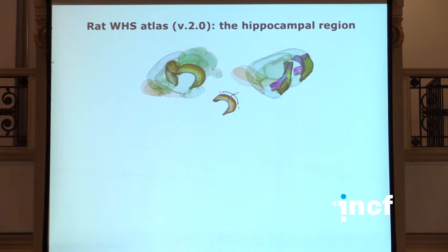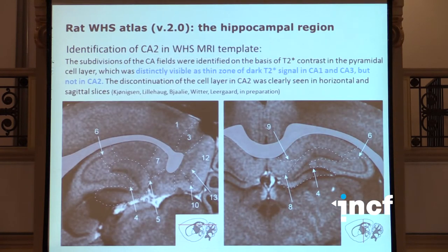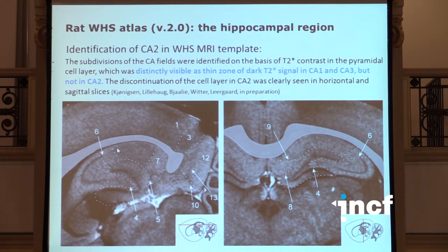Moving back to the voxel space atlas: the first version is out and we have continued to delineate the hippocampal region in detail in collaboration with Menno Witter. Combining information from multiple MRI modalities, it turned out to be possible to identify most of the boundaries that have been identified in histology, and most importantly it is possible to give explicit criteria for the boundaries — for example, the CA2 region is detected as a thin zone of dark labeling in the cell layer, which is absent in CA2. This illustrates how the criteria for delineating are very important.